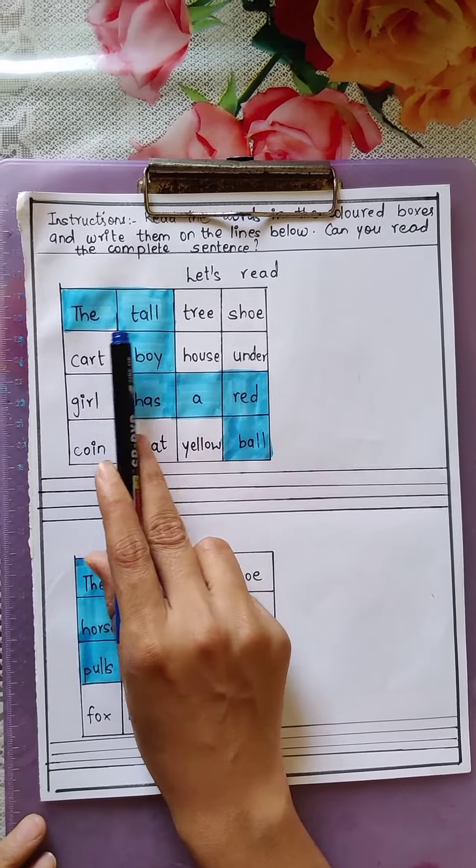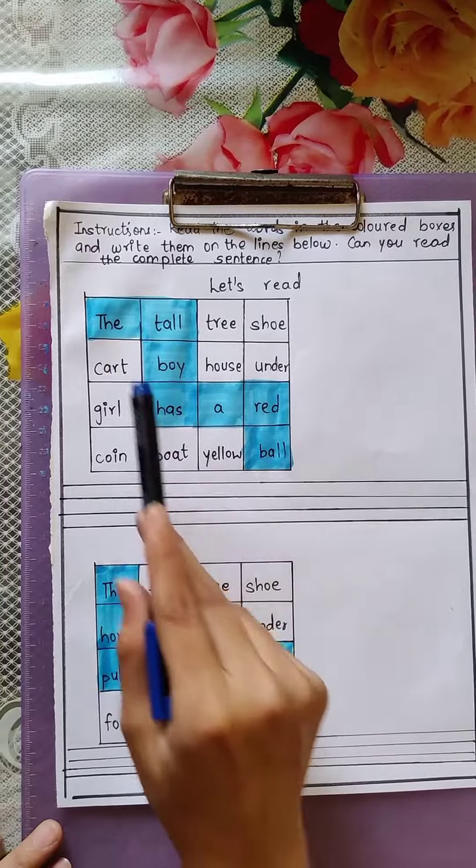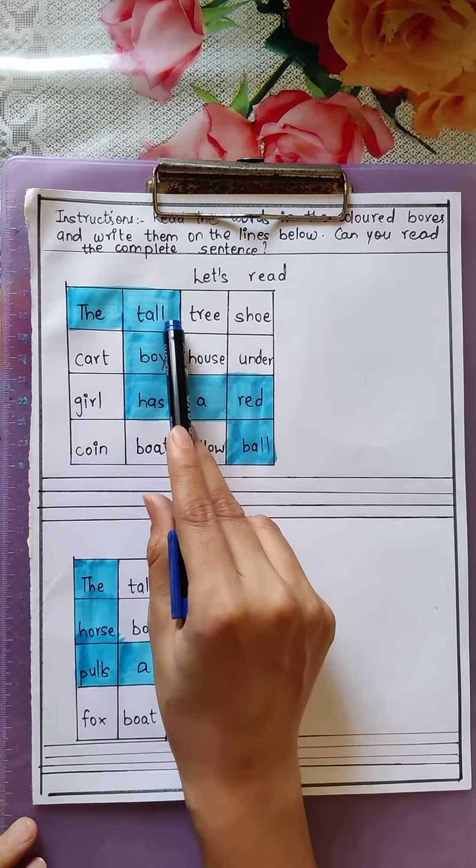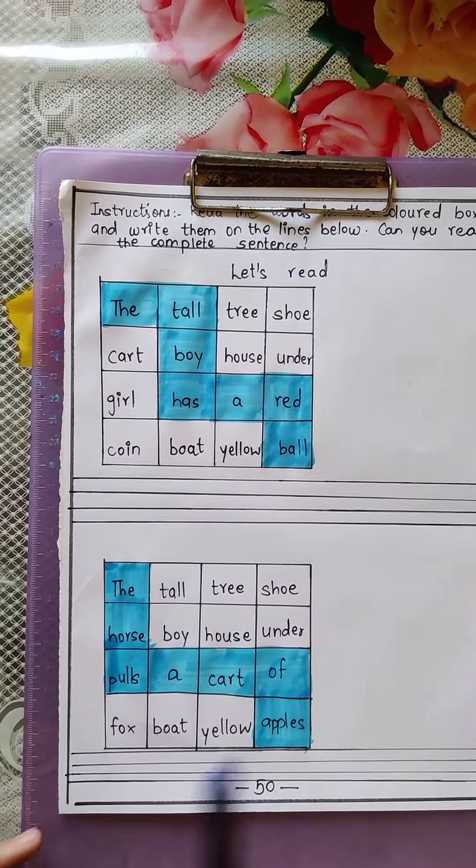First one is: the tall boy has a red ball. What is the first sentence? The tall boy has a red ball. So we have to write the sentence here.